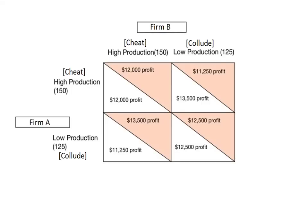Here we have a basic payoff matrix showing this prisoner's dilemma with the problem of collusion. The payoff for firm A is shown in white and for firm B in orange. If we look at firm A's decision to either do high production and cheat the system — high quantities, lower prices — or low production keeping quantity limited to charge the monopoly price, firm A has a dominant strategy to do high production. If firm B cheats, firm A chooses between $12,000 if they cheat and $11,250 if they collude, so they take the $12,000.